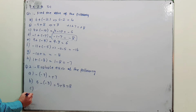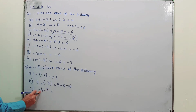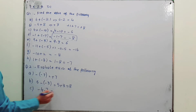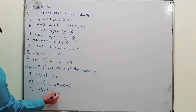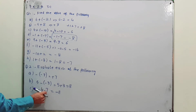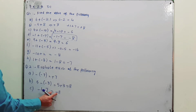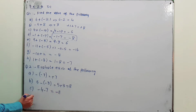Part C: minus 4 minus 7. The signs are the same — both negative. So you add the numbers: 7 plus 4 is 11, but the sign will be negative. When signs are the same, add both numbers and retain the common sign.